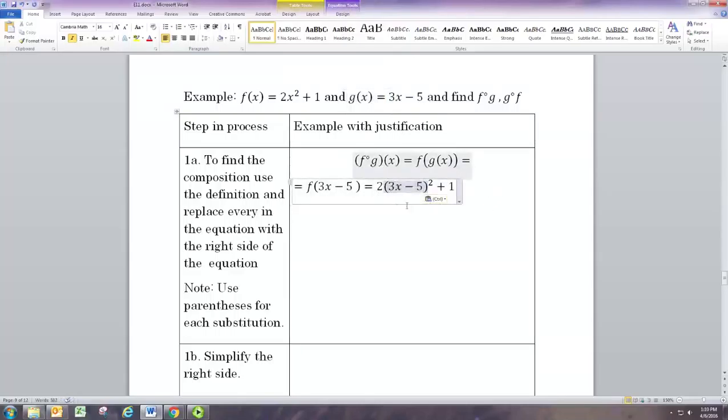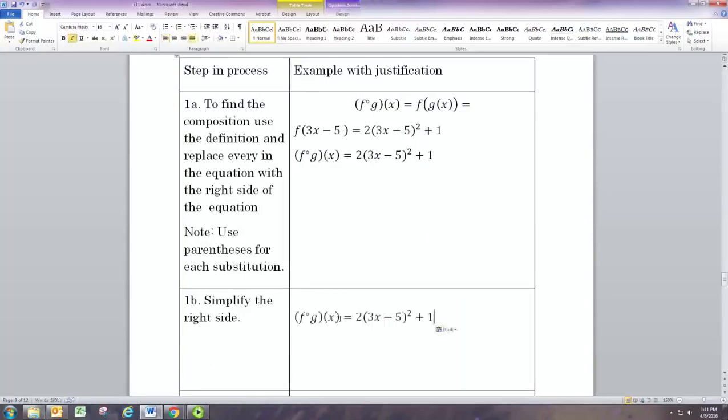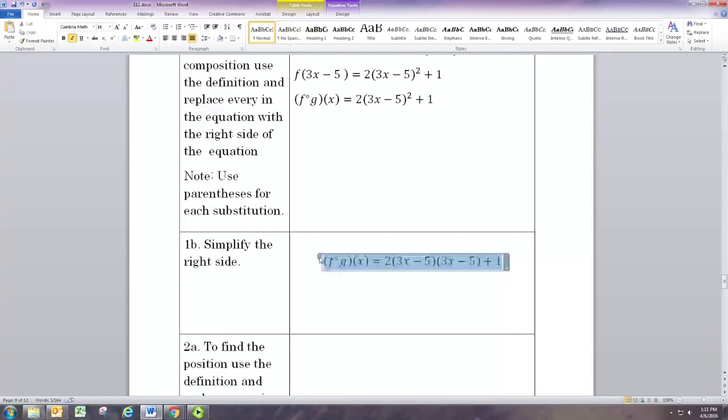Let's go ahead and show this middle step. We're going to replace g of x with 3x minus 5, because that's what g of x equals. And we're basically completing this equation here, but replacing x with 3x minus 5. So that means we need to replace that x with 3x minus 5. It's a good idea to use parentheses everywhere you substitute in.